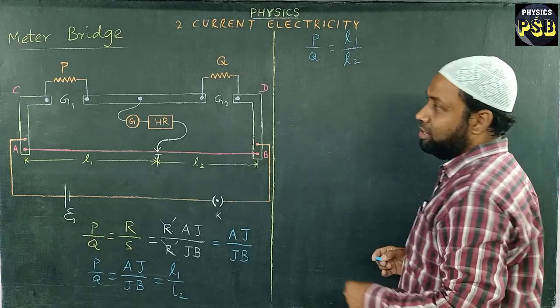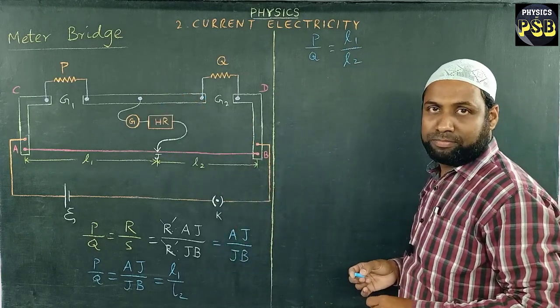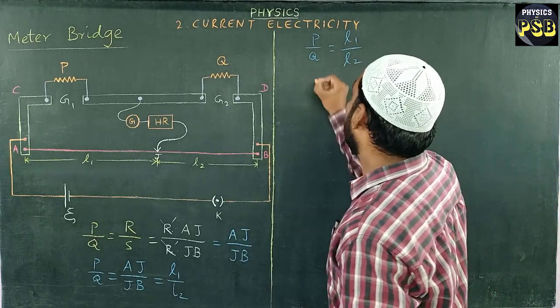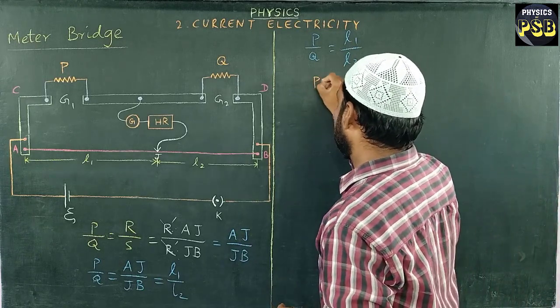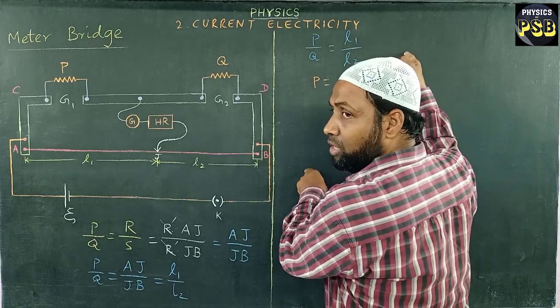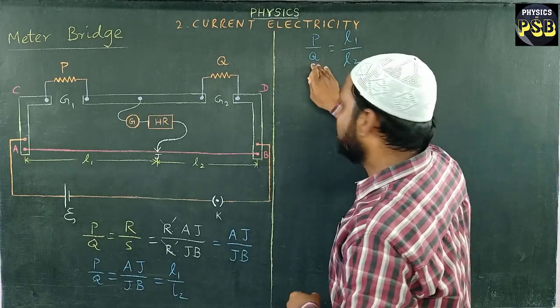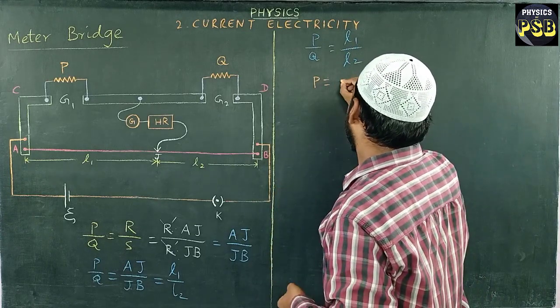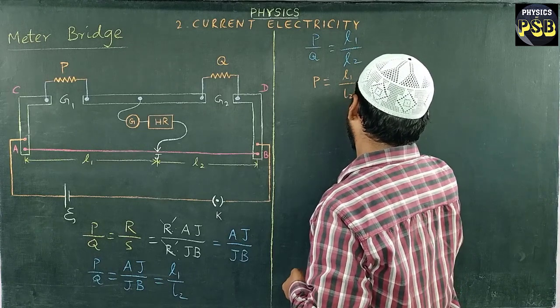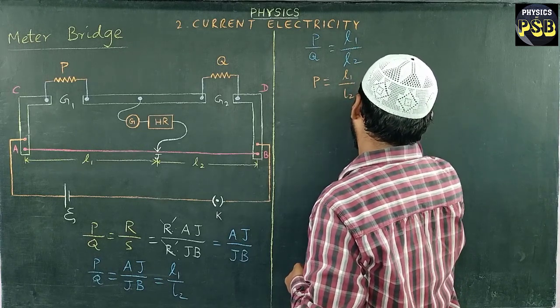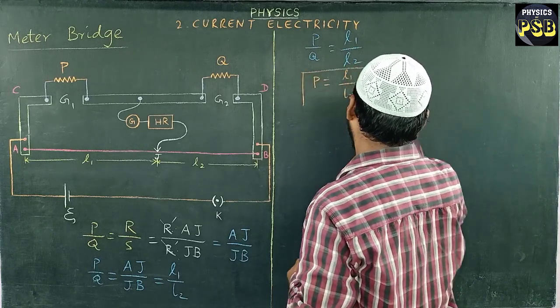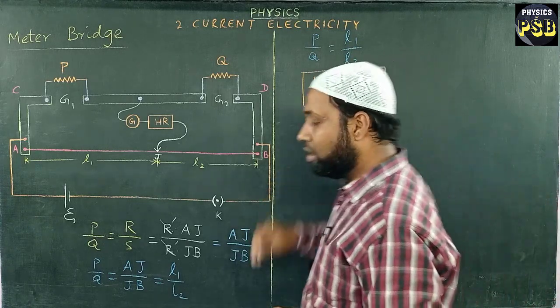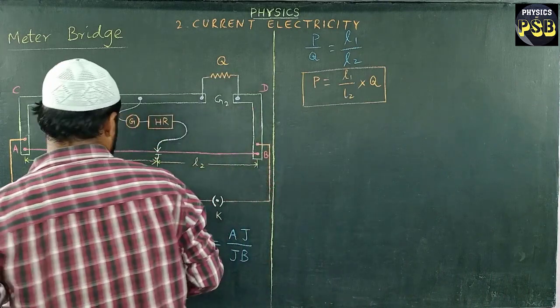Now from this, the value of P, the unknown resistance, can be obtained by cross multiplication. I keep P as such, and Q is taken to the other side of the equation. When it is taken to the right hand side, it will multiply. So P equals L1 upon L2 into Q. This is the expression for the resistance.